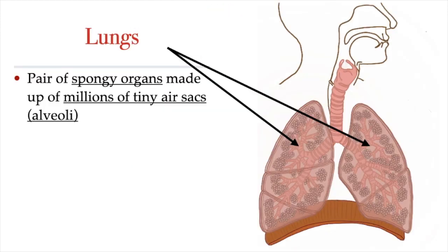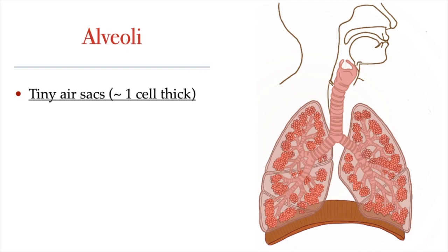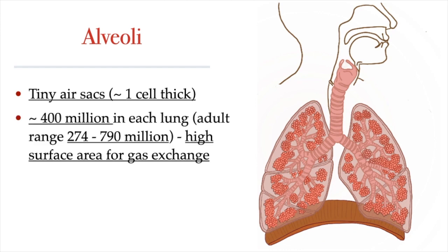Now let's talk about the major organs of the respiratory system: the lungs. The lungs are a pair of spongy organs that contain the bronchi and bronchioles, but are mostly made up of millions of tiny air sacs called alveoli. The alveoli are where gas exchange happens at the lungs. They are tiny air sacs, about one cell thick, located at the end of the bronchial tubes. We have about 400 million in each lung on average, with a range in adults calculated to be between 270 to 790 million alveoli per lung.